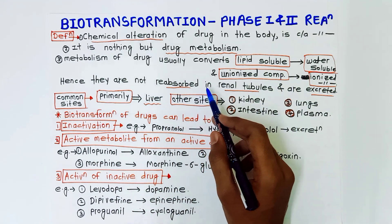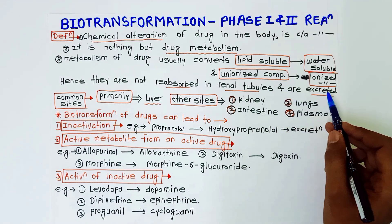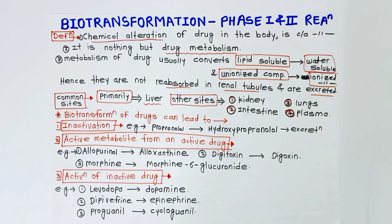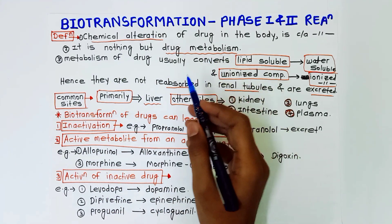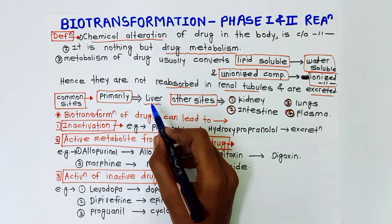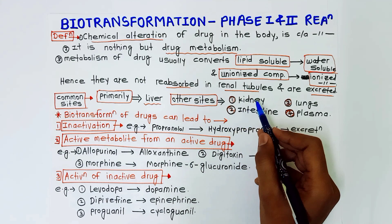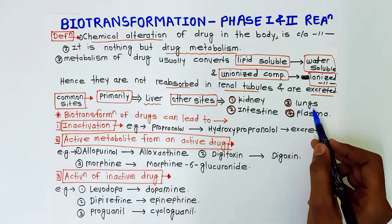Hence they are not reabsorbed in the renal tubules and they are excreted. So the common site for biotransformation or drug metabolism is mainly liver, and other sites are kidney, intestine, lungs, and plasma.